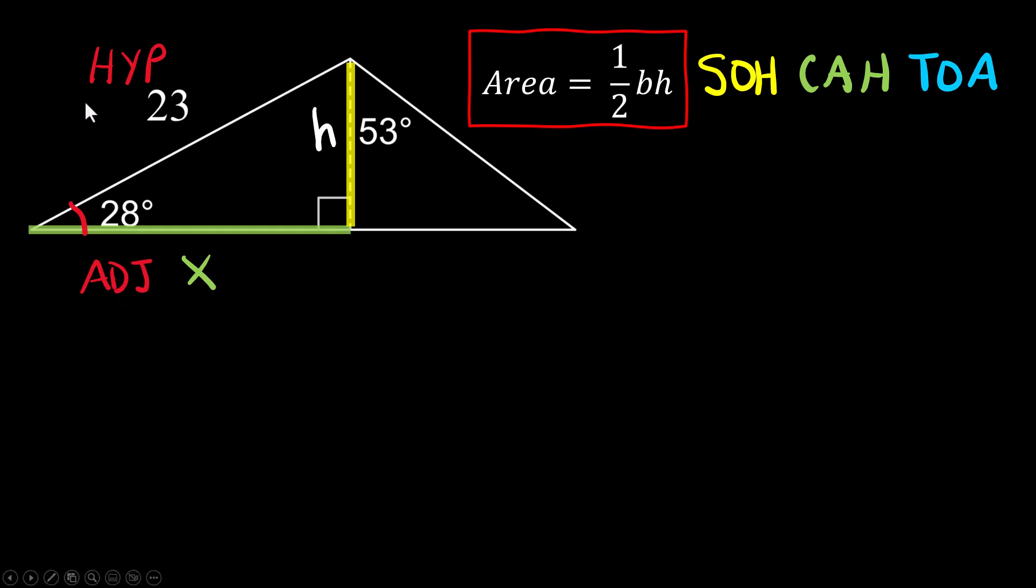I have an A and an H. So the only one right here is cosine. This is the trig ratio that uses adjacent and hypotenuse. Sine uses opposite and hypotenuse, and tangent uses opposite and adjacent. Cosine of 28 degrees equals x, the adjacent side, so that goes on top over the 23 which is my denominator. That's the trig setup.